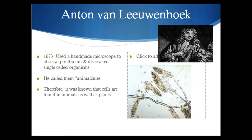The next scientist we are going to discuss is Antoine van Leeuwenhoek — try saying that three times fast. In 1673, Antoine van Leeuwenhoek used a handmade microscope to observe the gunk on his teeth and pond scum. When he looked at these underneath that handmade microscope, he observed little tiny single-celled organisms. He called these single-celled organisms animalcules because they looked like tiny animals. In addition to all of this, he is also known as the father of microbiology, and he is best known for discovering single-celled organisms called animalcules.